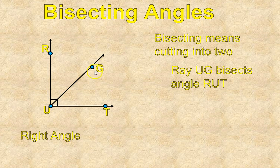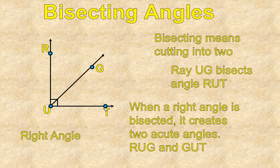So in other words, this, and we call this a ray when it has an end and an arrow, and we'll talk about that a little bit in just a second. But this ray UG from here to here cuts this angle RUG into two. It cuts it into two angles, two acute angles that are RUG and GUT.